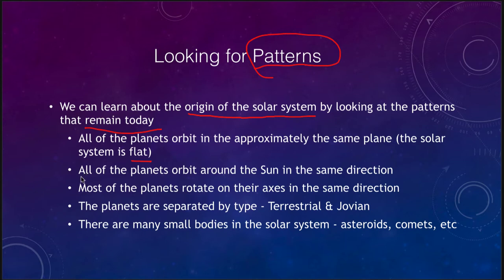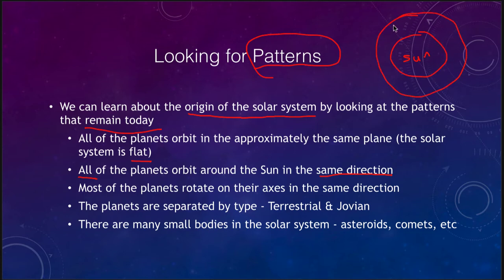We also notice that all of the planets orbit around the Sun in the same direction. Every single one goes in the same direction — they all go around counterclockwise if we look down from the Earth's North Pole.